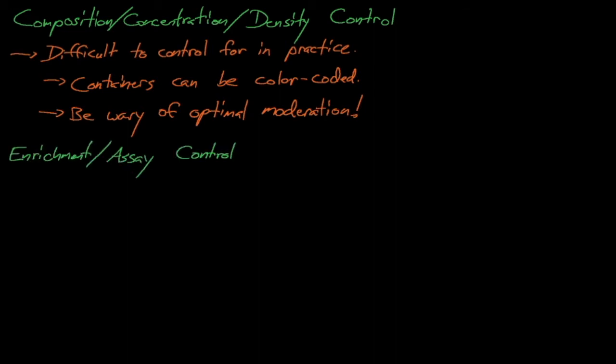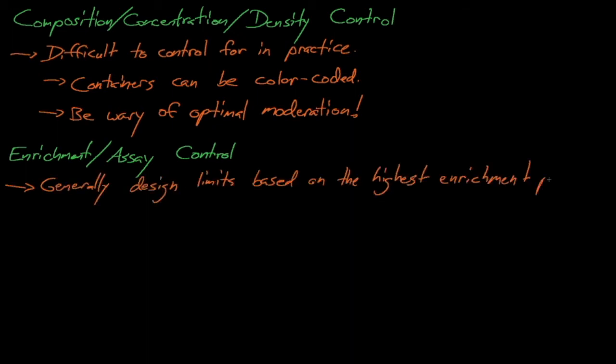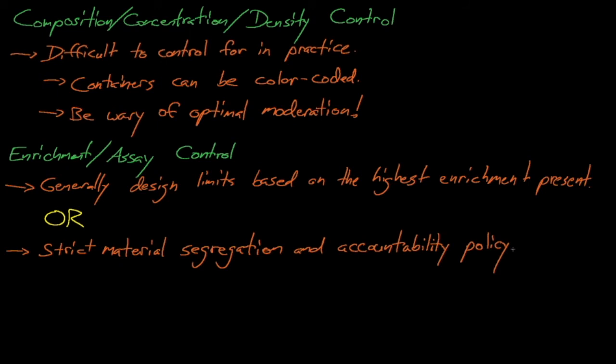Enrichment or assay control is similar to concentration control because it's difficult to know the enrichment of some material just by a quick inspection. Therefore, it's usually best to design our safety limits using the highest enrichment of material that is credible to be present, or to design a material segregation and accountability program that is rigorous enough to ensure that it's not credible for a high-enrichment material to show up in a low-enrichment operations area. It's also worth noting the difference between enrichment and assay. The term assay is generally applied to plutonium-containing materials, and a material's assay is essentially the opposite of enrichment. High-enrichment uranium could contain mostly U-235, while high-assay plutonium would contain mostly non-fissile plutonium-240.